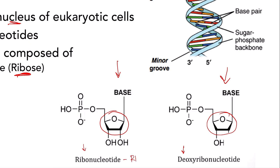Ribonucleotides are found in RNA, and deoxyribonucleotides are found in DNA. DNA has a deoxyribose structure in its backbone, while RNA has a ribonucleotide structure. The key differentiating factor is that at carbon number two, in deoxyribose there is no OH group, whereas in the ribonucleotide or RNA structure, there is an OH group at the second carbon — a very important differentiating factor between the two.